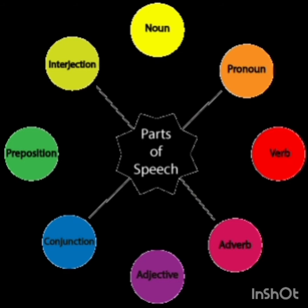All the parts of speech are interrelated with each other. In English grammar, parts of speech is very important because if you have no clear idea about parts of speech, you cannot form a sentence. This class is necessary from nursery to higher level. There are eight parts of speech: noun, pronoun, verb, adverb, adjective, preposition, conjunction, and interjection.